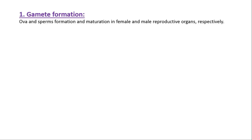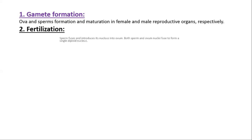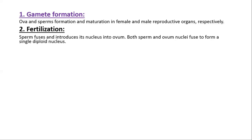Gamete formation is simply the formation of ova, which are the female cells, and sperms, which are the male cells. It includes the maturation of ova in the female reproductive organs and maturation of sperms in the male reproductive organs.